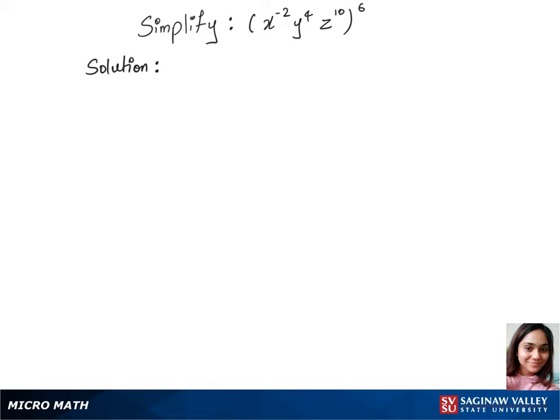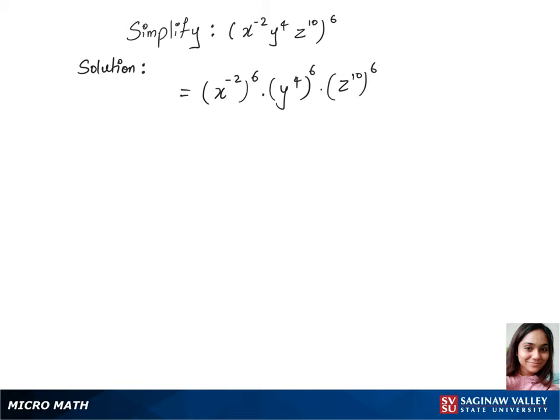To simplify (x^-2 y^4 z^10)^6, we'll first separate the power 6 between those variables. So let's write (x^-2)^6 times (y^4)^6 times (z^10)^6. Now we can use the exponent rule, which is (a^m)^n equals a^(m times n).